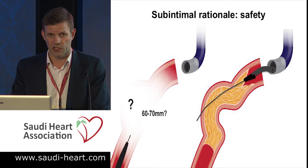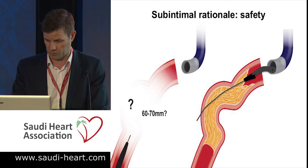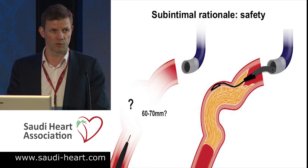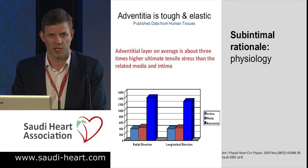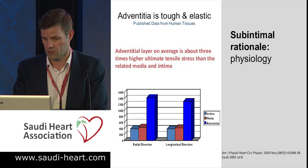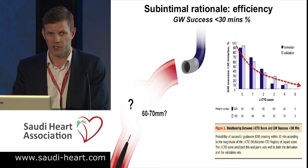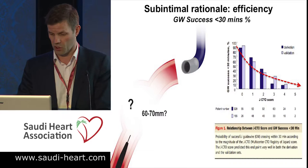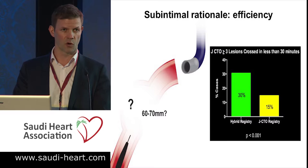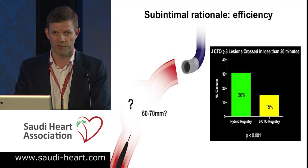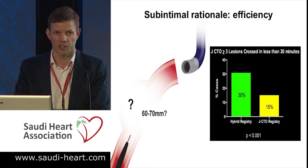What we believe is that actually using the sub-intimal space is relatively safe when we use a knuckle wire to traverse a long lesion. The reason is the physiology: the media and intimal layers are relatively weak compared to the adventitial layers, which has three times the radial and longitudinal strength of the other two layers. It's also efficient — our own registry data shows that with a JCTO score greater than three, we can get a wire into the distal vessel within 30 minutes in 30% of cases, compared to only 15% using predominantly a wire-based technique in the JCTO registry.